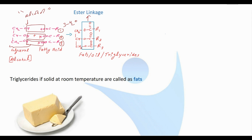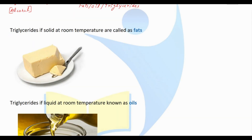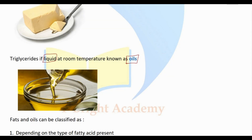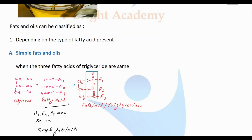This ester linkage forms fats, oils, and triglycerides. If triglycerides are solid at room temperature, they are called fats. If they are liquid at room temperature, they are called oils.